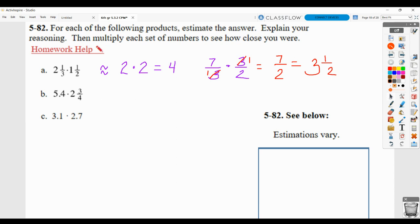For B, let's talk about the estimate first. For the estimate, I would maybe say, all right, 5 and 4/10 is pretty close to 5. 2 and 3/4 is pretty close to 3. So my estimate would be about 15.